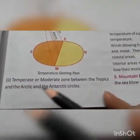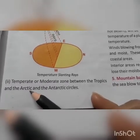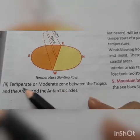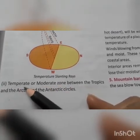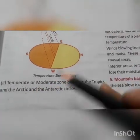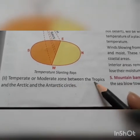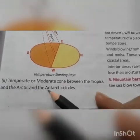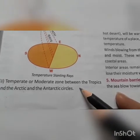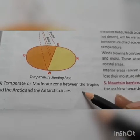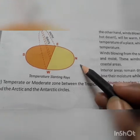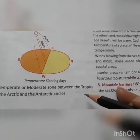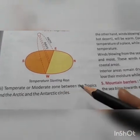The second is the temperate or moderate zone, between the tropics and the Arctic and Antarctic circles. Temperate means neither very hot nor very cold. This covers 23.5 degrees North to 66.5 degrees North, and 23.5 degrees South to 66.5 degrees South. These two areas come under the temperate zone.